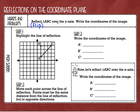In this case, we are going to reflect triangle ABC over the y-axis. I know that on a coordinate plane, this is my x-axis and this is my y-axis. So I'm going to be taking this particular triangle and flipping it over the y-axis, which is going to move it from the right side over to the left side of my graph. The first thing I am going to do is highlight my line of reflection — I'm going to draw a line right on the y-axis because that's the line I will be reflecting over.